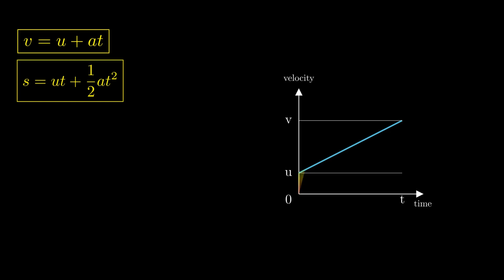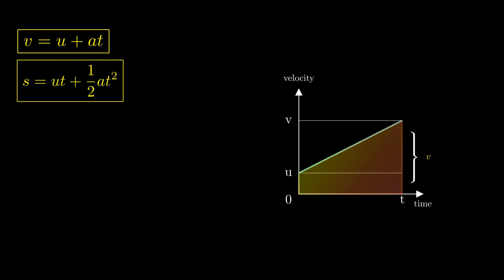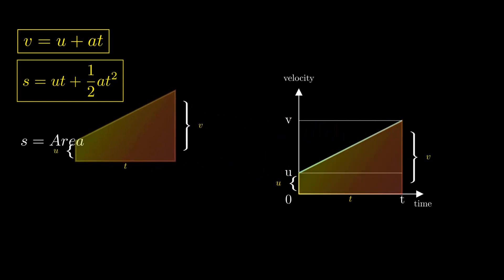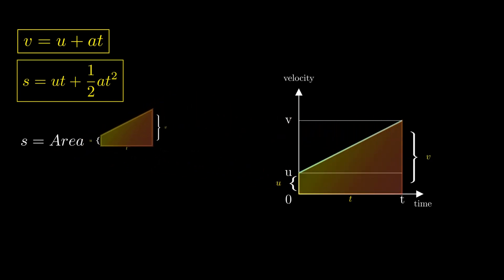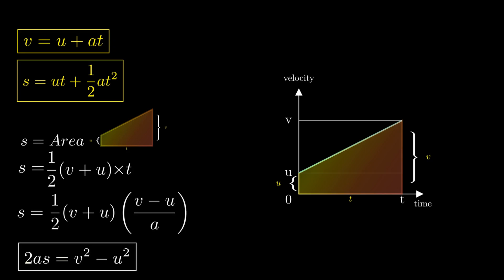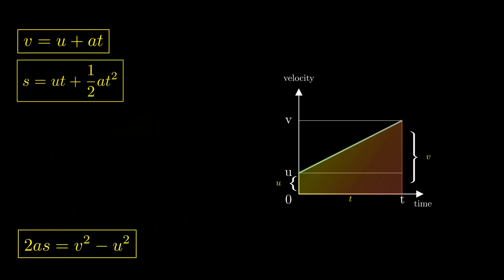For the third equation of motion, we will again be calculating displacement, which is given by area under the curve. But now we will calculate the area as a single entity alone, which is a trapezium. This trapezium has parallel sides u and v and height t. Therefore, by using the formula for area of trapezium, which is 1/2 × sum of parallel sides × height, we get s = 1/2(v + u)t. We will again eliminate t by using the first equation of motion, which leaves us with 2as = v² - u² as our third equation of motion.